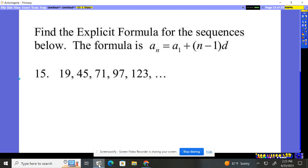We want to find the explicit formula for the sequence below. The formula is given right here. What we need is the first term. The first term is 19, so a₁ equals 19.